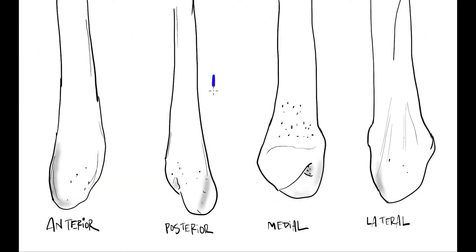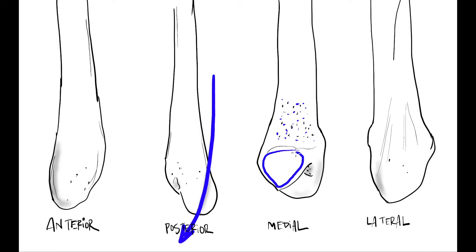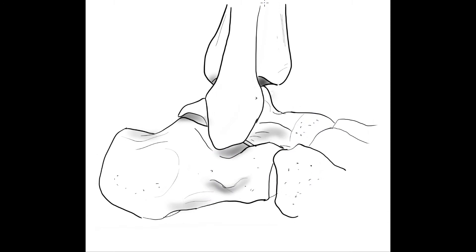The distal end of the fibula has a posterior groove for the passage of the peroneal tendons. The medial surface has a surface for the tibiofibular syndesmosis ligament, a triangular articular facet with a distal apex, and the malleolar fossa for the insertion of the posterior talofibular ligament. The fibula is located lateral and posterior relative to the tibia.